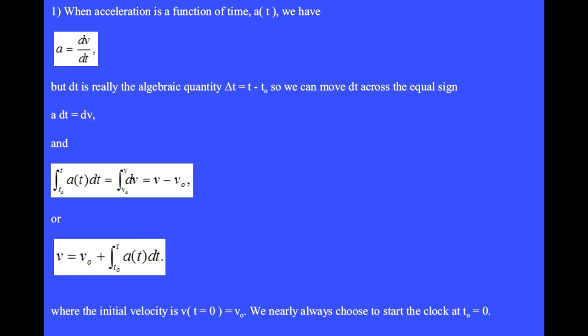When acceleration is a function of time, a(t), we write the acceleration as the derivative, a equals dv/dt, but dt is really the algebraic quantity delta t equals t minus t zero, which is just supposed to be a tiny difference. So we can move dt across the equal sign. We have a dt equals dv.